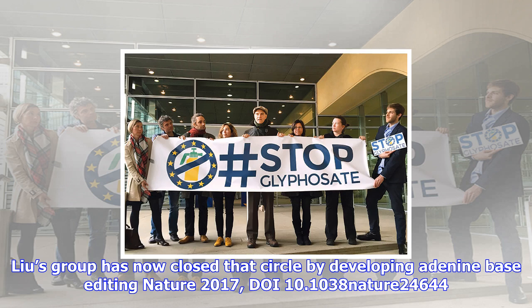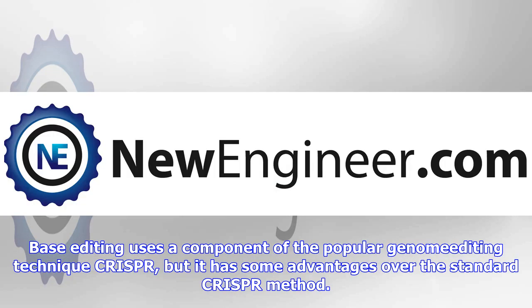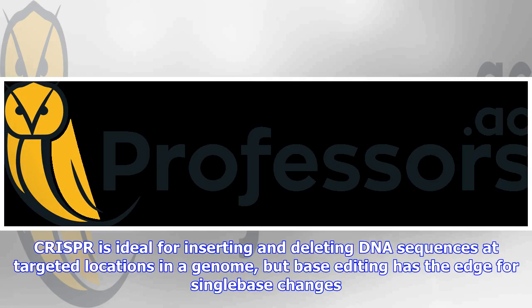Base editing uses a component of the popular genome editing technique CRISPR, but it has some advantages over the standard CRISPR method. CRISPR is ideal for inserting and deleting DNA sequences at targeted locations in a genome, but base editing has the edge for single-base changes, because it is significantly more efficient than standard CRISPR at making single-base substitutions.